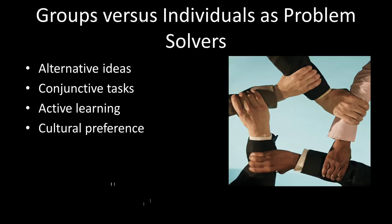An important concept in this first chapter is how groups versus individuals function as problem solvers. Groups can be an effective structure because they're a really good source of alternative ideas. You alone are a sum of your parts and experiences; however, when you come together in a group, it allows a wide variety of ideas that can lead to better decision making. Groups can also be really useful for conjunctive tasks — accomplishing things that have lots of moving parts. Group members can come together to accomplish things more effectively than an individual trying to do the same task.